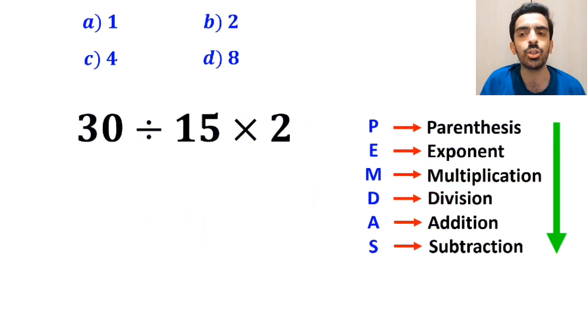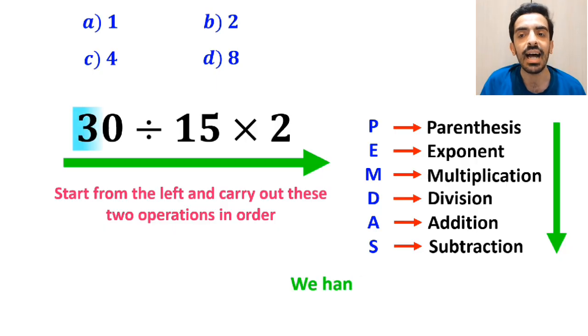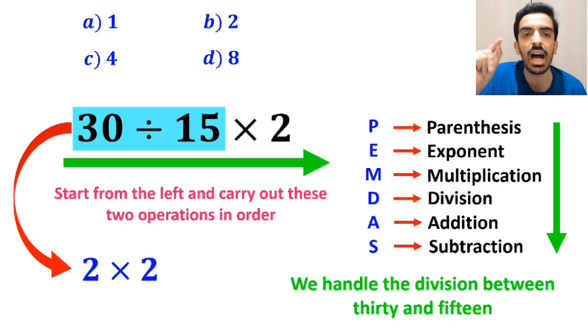In this case, the best approach is to start from the left and carry out these two operations in order. So, first we handle the division between 30 and 15, which simplifies this expression to 2 times 2.